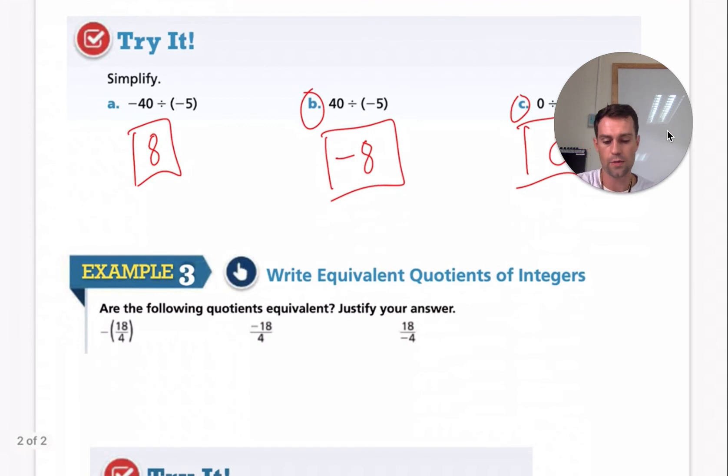Are the following quotients equivalent? Justify your answer. So are these the same? Yes, they are the same because this is negative 18 over four. This is negative 18 over four. And this is negative 18 over four. The reason why they're the same is because we only have one negative. It's because there is just one negative here. Since there's a negative, it doesn't matter if it's going to the top or the bottom.